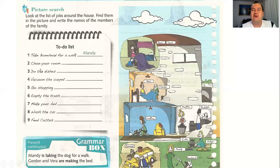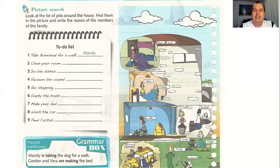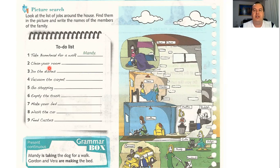Number two: clean your room. Isso eu disse no começo da aula — você está limpando, organizando o seu quarto? Clean aqui tem a ideia de limpar e organizar. Number three: do the dishes — lavar a louça. É uma expressão; o verbo lavar em inglês é wash, mas é muito comum usar também a expressão 'do' com o substantivo dish. Portanto, lavar a louça: do the dishes.